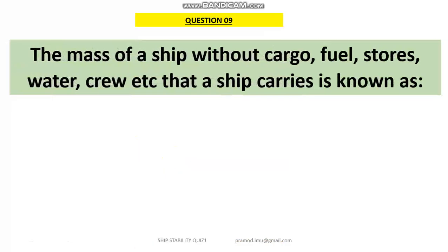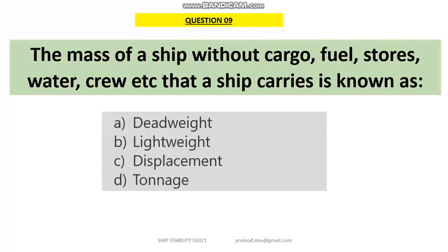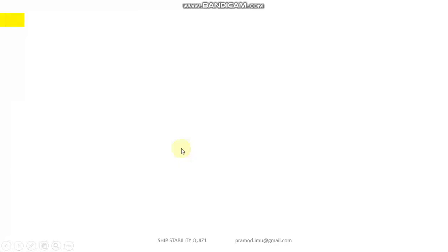Question 9: the mass of a ship without cargo, fuel, stores, water, crew, etc. is what we call — the answer is B — lightweight. We know that the total mass is displacement, and the part of the mass which can be easily removed from the vessel, like cargo and fuel, is the deadweight. So displacement minus deadweight will be your lightweight of the vessel.